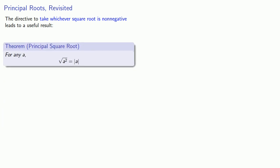The directive to take whichever square root is non-negative leads to the following useful result: for any value of a, the principal square root of a squared is the absolute value of a.